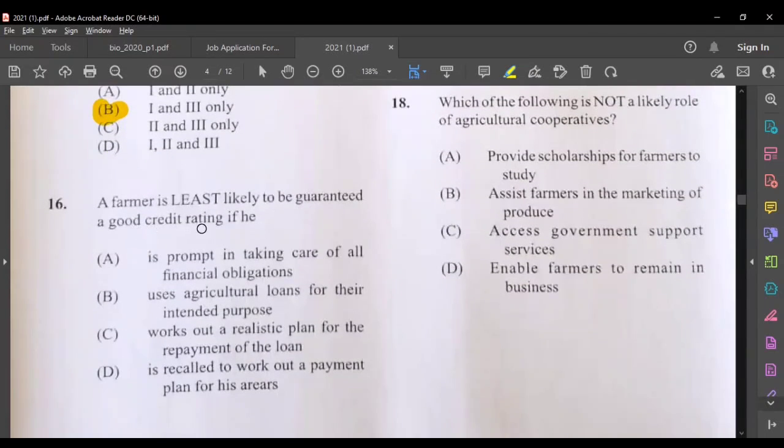A farmer is least likely to be guaranteed a good credit rating if he is prompt in taking care of all financial obligations, uses agricultural loans for their intended purpose, works out a realistic plan for the repayment, or is recalled to work out a repayment plan for his arrears. So if the farmer is recalled, it means that they were not making their payments as they should be. And that would cause them to have a low credit rating.